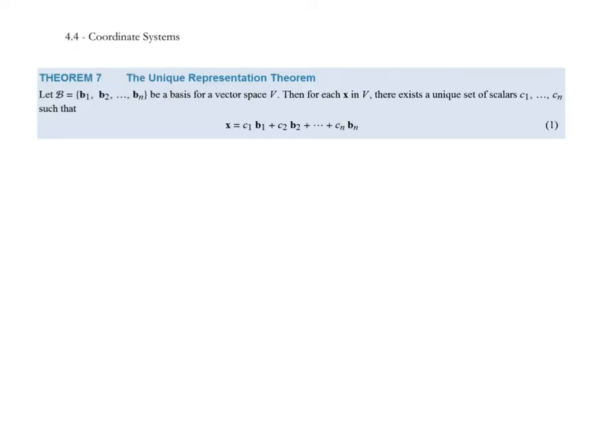The section we're covering in today's video is 4.4 called Coordinate Systems, something you're familiar with. You've been working with coordinate systems since maybe middle school, but we get a glimpse at what they look like in linear algebra. We start out the section with a theorem and we'll go through the proof. It's called the Unique Representation Theorem.